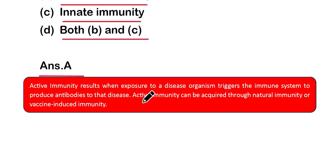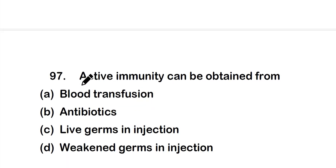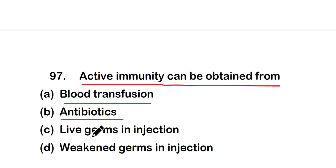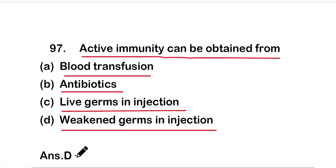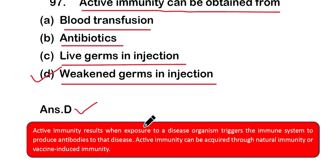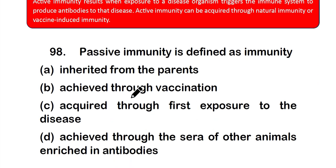Question number 97: Active immunity can be obtained from — option A: blood transfusion, option B: antibiotics, option C: live germ injection, or option D: weakened germs in injection. The right answer is option D — weakened germs in injection. Active immunity results when exposure to a disease organism triggers the immune system to produce antibodies, acquired through natural immunity or vaccine-induced immunity.